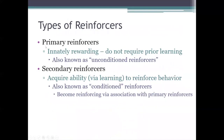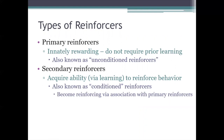One important distinction to make is between what we call primary reinforcers and secondary reinforcers. Primary reinforcers are defined by the fact that they don't require any prior learning before they can reinforce a behavior — they don't require any previous conditioning before they can strengthen the behaviors that they follow. For that reason, primary reinforcers are also known as unconditioned reinforcers. Some good examples would be things like food, water, and warmth, because you don't have to learn anything first for those consequences to reinforce your behavior. They are innately reinforcing — we're born with instinctive desires for those things.